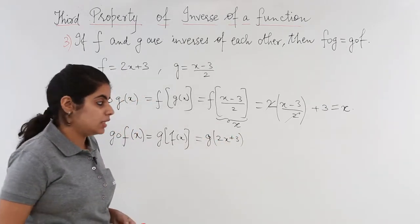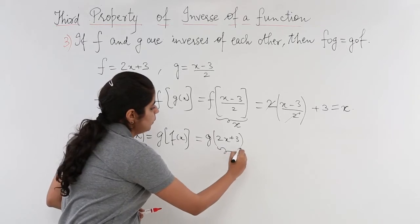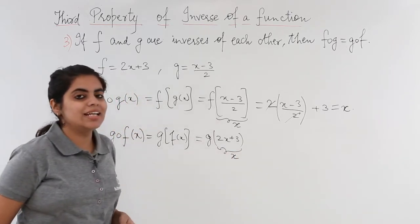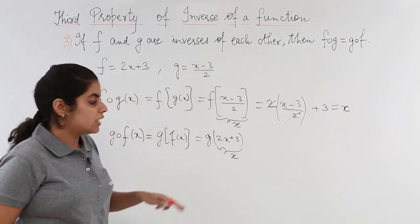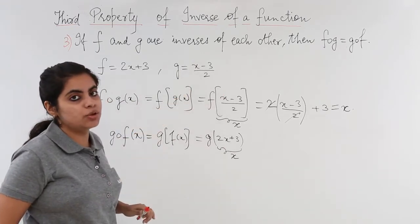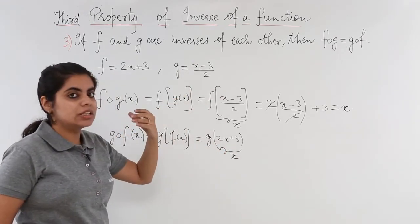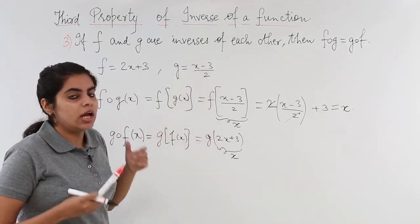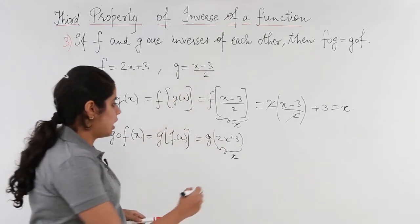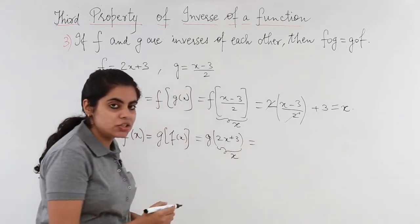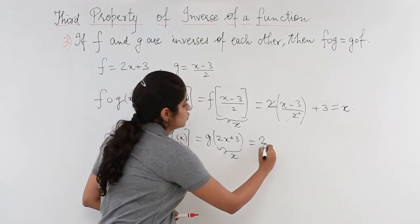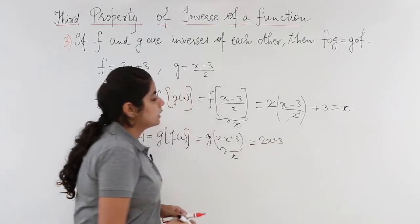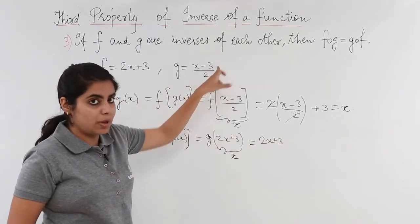Now that means this whole 2x plus 3 will now act as my x, and g of x is x minus 3 upon 2. So 2x plus 3 will go in place of x here in g. Let's see how. I have to write 2x plus 3. I wrote 2x plus 3, then the numerator has minus 3, so I wrote minus 3.